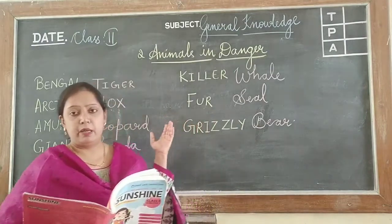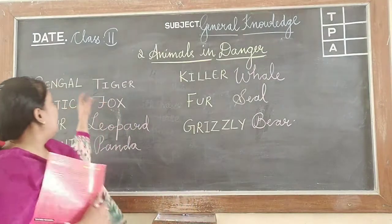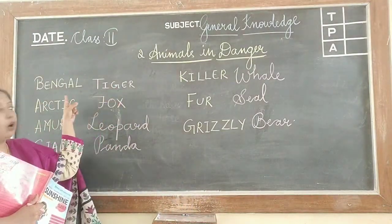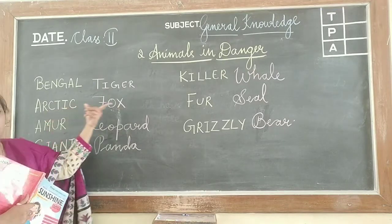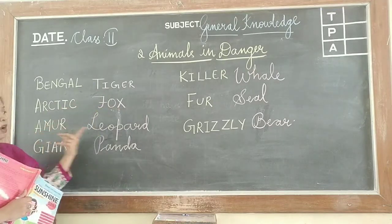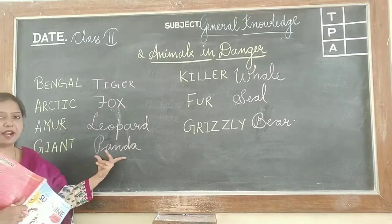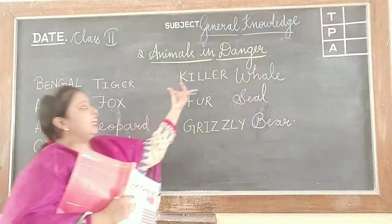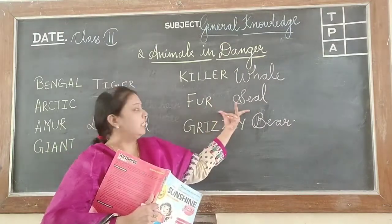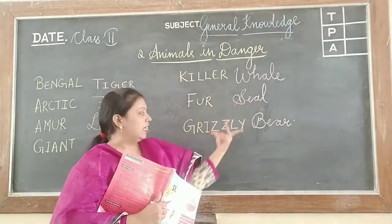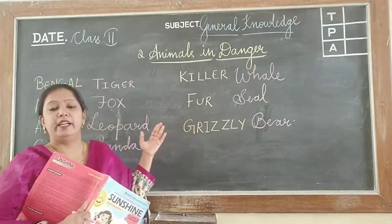Here are some names of animals which are endangered: Bengal tiger, Arctic fox, Amur leopard, Giant panda, killer whale, Finn's sea, grizzly bear. These animals are in danger now.